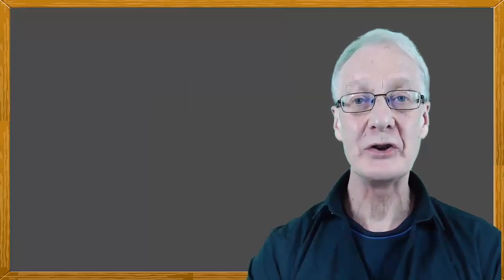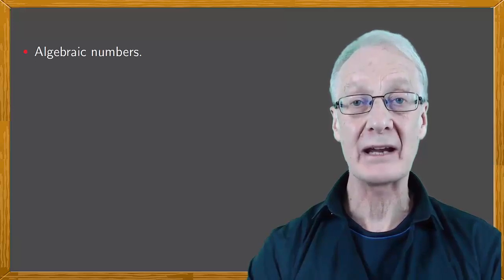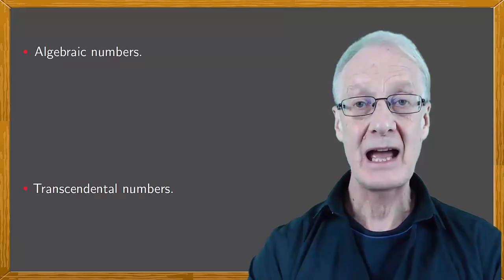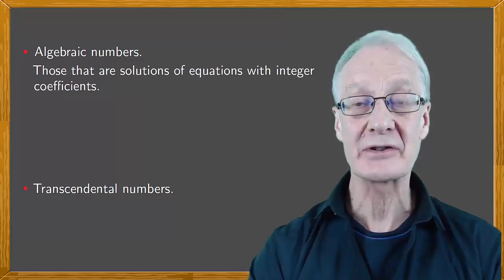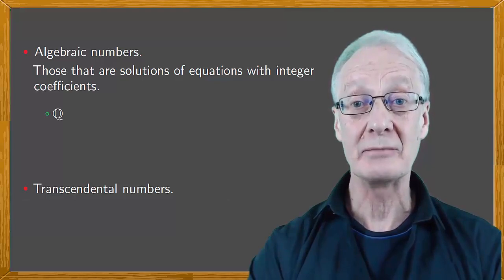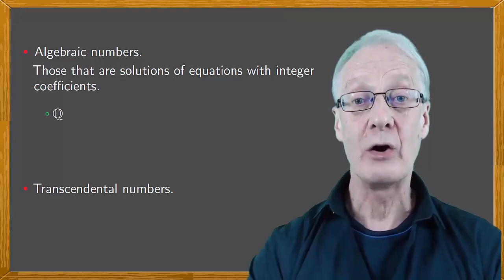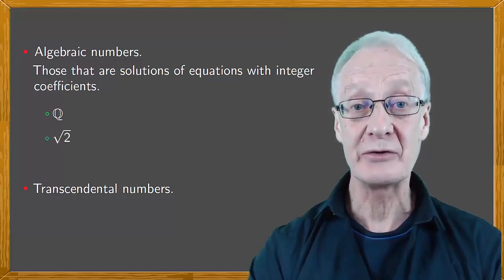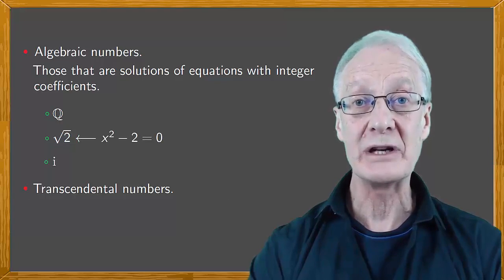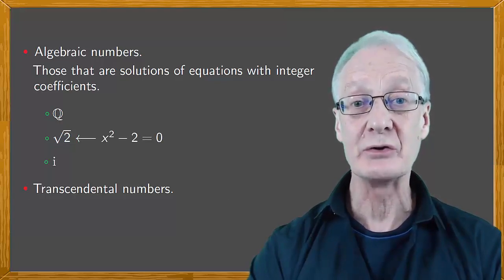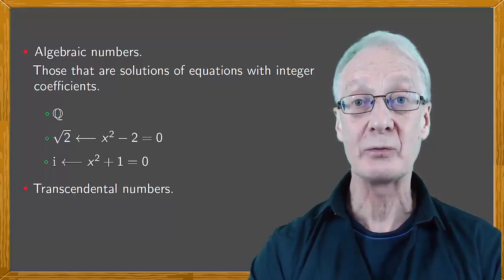Finally, we need to mention that numbers can be either algebraic or transcendental. Algebraic numbers are those that are solutions of equations with integer coefficients. So, any rational number is algebraic. Also, numbers such as the square root of 2, which is the solution of the equation x squared minus 2 equals 0, and the imaginary unit i, which is the solution of the equation x squared plus 1 equals 0, are algebraic.